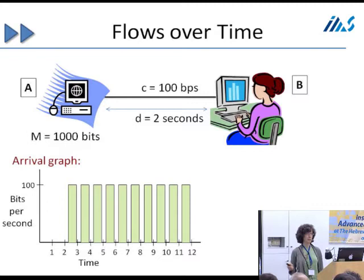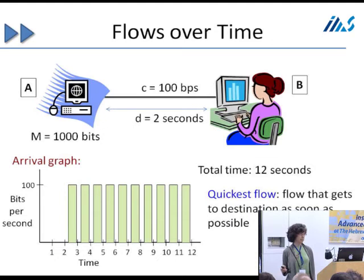We're going to be looking a lot at these arrival graphs in this talk. The total time takes 12 seconds. One thing the optimal route would be is the quickest flow — the flow that gets to the destination as quickly as possible. In this particular example, this is the quickest flow because it's so simple: it's just one link.